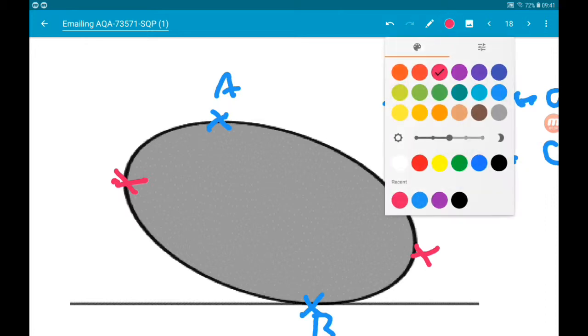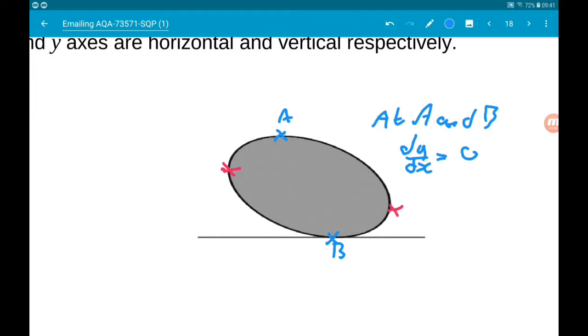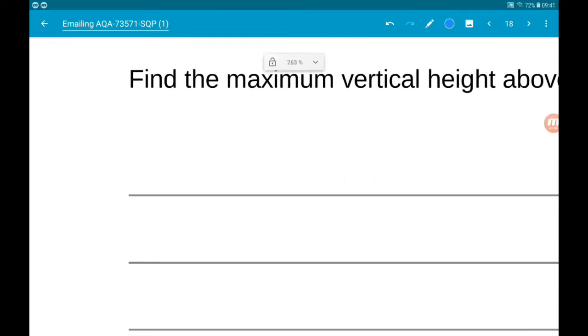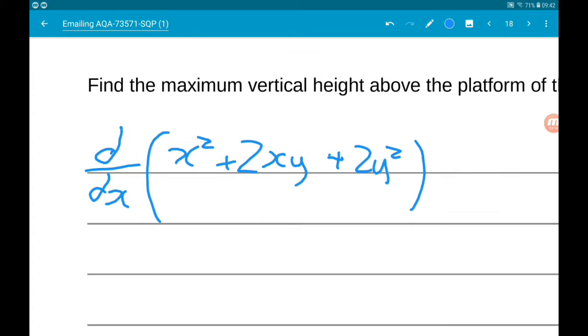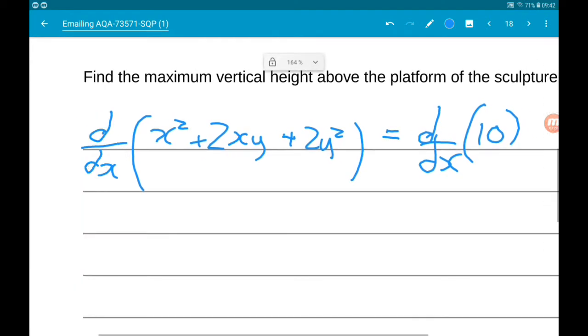So what we need to do then is find dy/dx. So it's implicit differentiation. So we need to differentiate with respect to x, x² + 2xy + 2y². Now if we differentiate the left hand side, we have to differentiate the right hand side. So, that's now our mission.